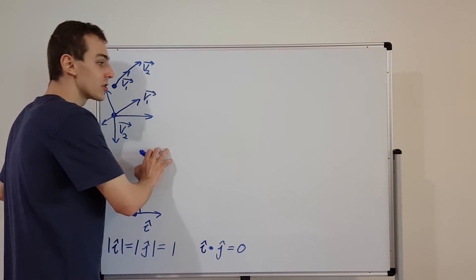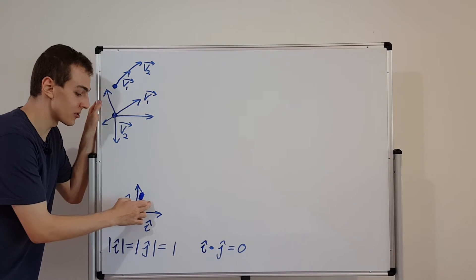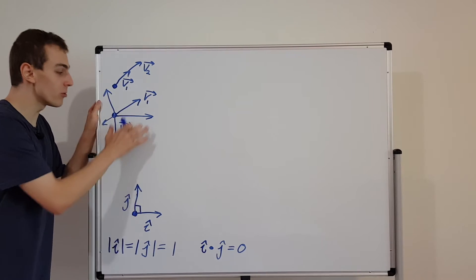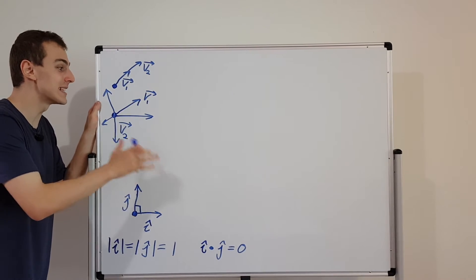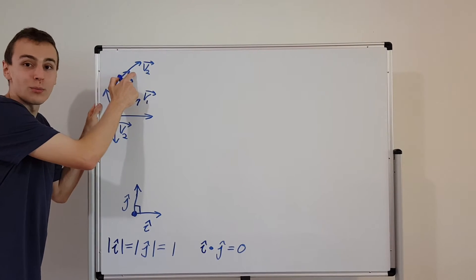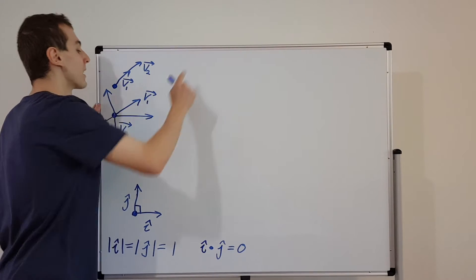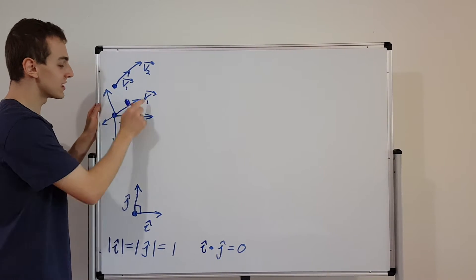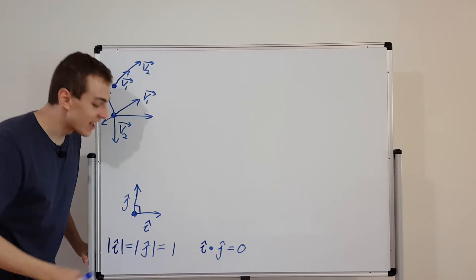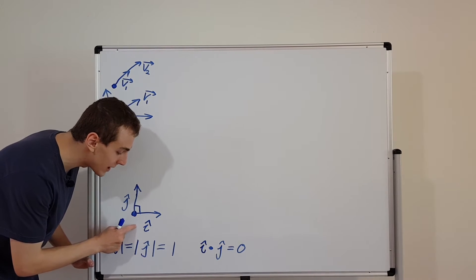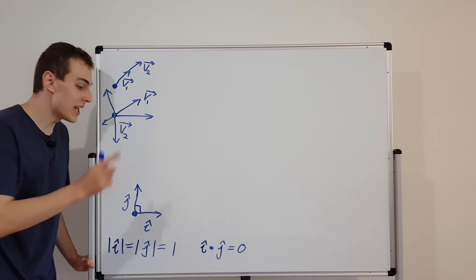All vectors in the plane are described by these two basis vectors. This is generally true for any two vectors that don't share the same direction — those that are not in the same span. Earlier, V1 and V2 pointing in the same direction were limited to one line. V1 and V2 pointing in different directions could construct any vector, but the computations were too tedious. i-hat and j-hat have the special property of being mutually perpendicular and unit vectors.